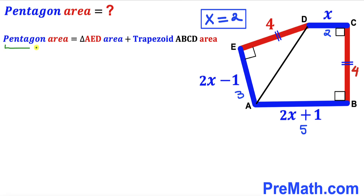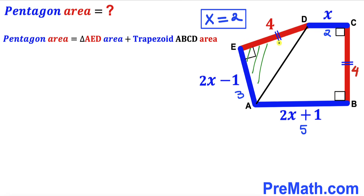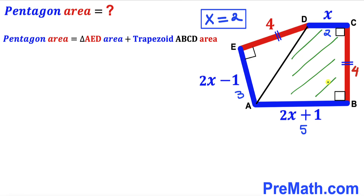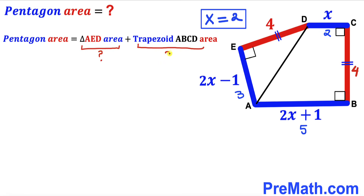We observe that the pentagon area equals the area of right triangle AED plus the area of trapezoid ABCD. So our task now is to calculate both of these areas.